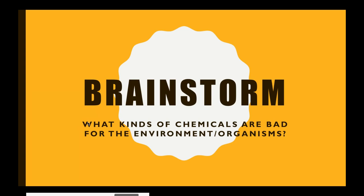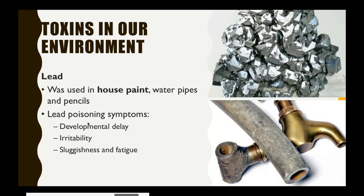We are going to talk about a few different chemicals that are fairly well known and have some negative impacts on our bodies. The first one is lead. Lead was used in house paint, water pipes, and pencils until around the 1960s. It was very popular and no one had an issue with it until we started seeing symptoms of lead poisoning, which include developmental delays, irritability, sluggishness and fatigue, as well as many others.